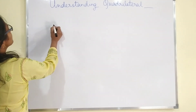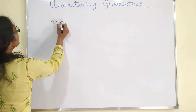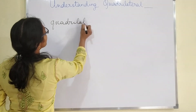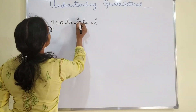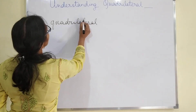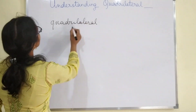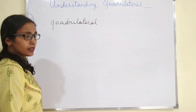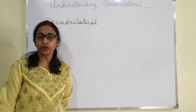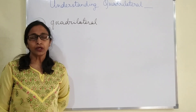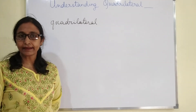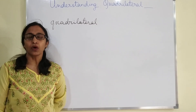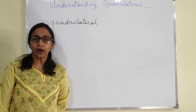I hope you understand all the terms. Now the next term is quadrilateral. A figure which is having four sides is called a quadrilateral. So square, rectangle, trapezium, rhombus — all these are quadrilaterals.